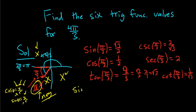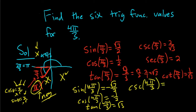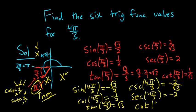So the sine of 4π over 3 is −√3 over 2. The cosine of 4π over 3 is −1/2. The tangent of 4π over 3 is positive, because negative over negative is positive, so it's still √3. The cosecant of 4π over 3 is −2 over √3. The secant of 4π over 3 is −2. And the cotangent of 4π over 3 stays positive, so it's 1 over √3.